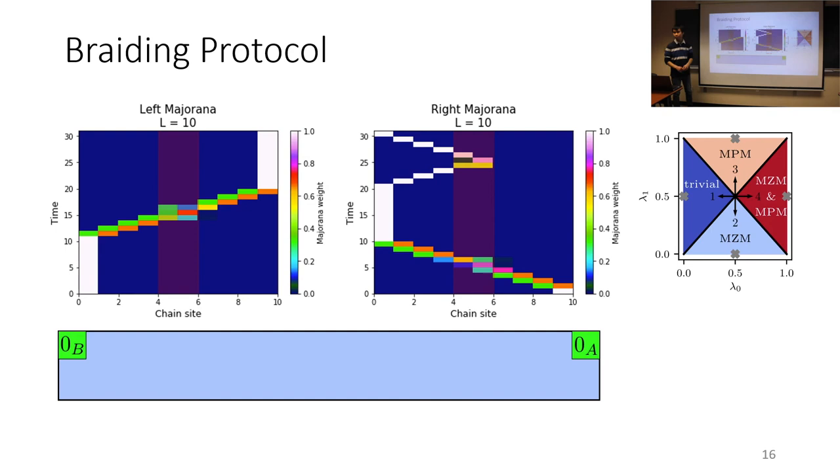So that was for a clean non-interacting system. Let's go ahead and add disorder. What do we add disorder to? It makes sense naturally to add disorder to the chemical potential, which in our system is represented by lambda-1.